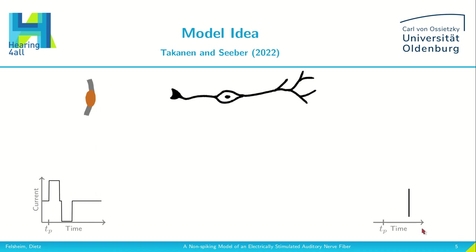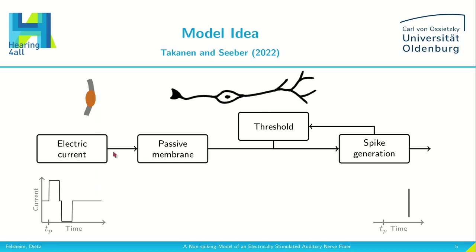This model is a spiking model, which means it outputs a single spike time. Also, it is a stochastic model, so if we run the same model twice, we get slightly different results. The input to the model is an electric current, for example a biphasic pulse. Then they use a leaky integrator to obtain the passive membrane potential.